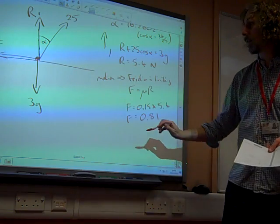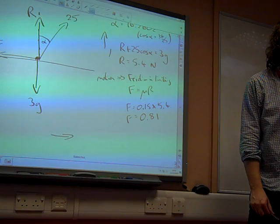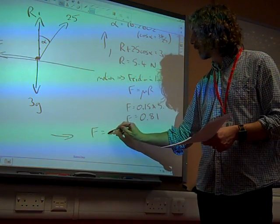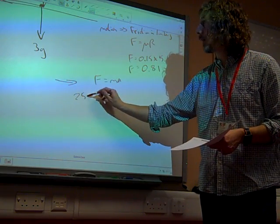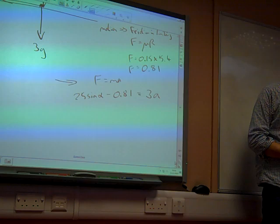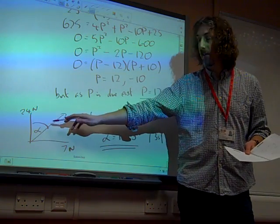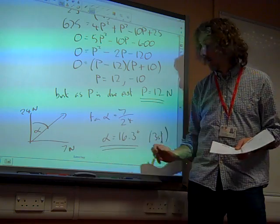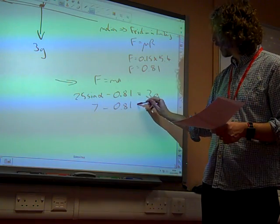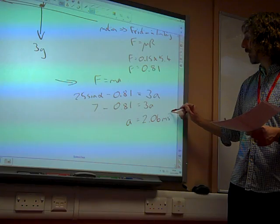We're left now using F equals ma, resolving in that direction. That would be the direction of motion because friction is resisting the motion in that direction. Using F equals ma, we've got 25 sin alpha minus 0.81 equals mass times acceleration. From our diagram, sin alpha is 7 over 25, so 25 sin alpha is 7. So 7 minus 0.81 equals 3A. Simplifying that gives us A is 2.06 meters per second squared.